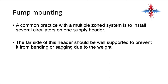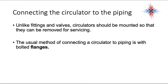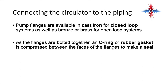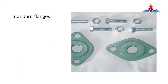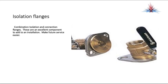A common practice with multiple zone systems is to install several circulators on one supply header. The far side of the header should be well supported to prevent bending or sagging from the weight. Unlike fittings and zone valves, circulators should be mounted so they can be removed easily for servicing. The usual method is with bolted flanges — available in cast iron for closed loop systems or bronze/brass for open loop systems. An O-ring or rubber gasket compressed between flange faces creates a good seal. Isolation flanges allow removal of the circulator without draining the system.